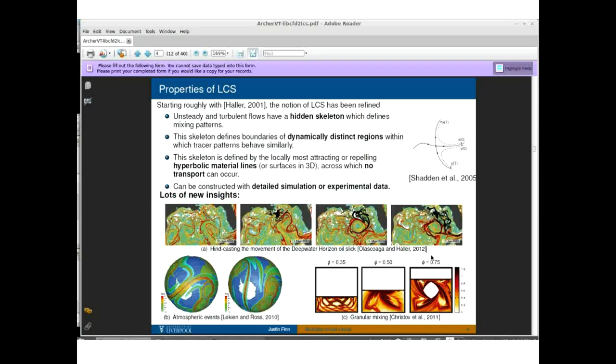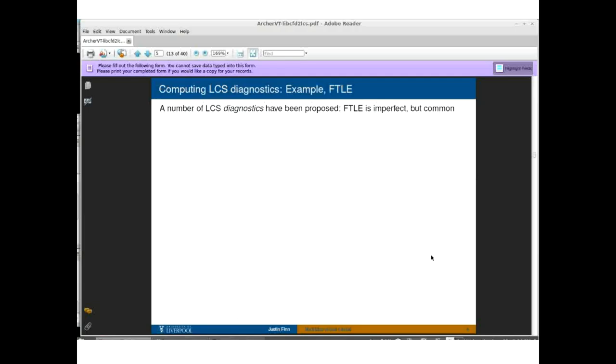There's been a lot of different ideas that have developed over the years about how we identify and actually compute the Lagrangian coherent structures. What I'm going to propose is that we think about Lagrangian coherent structured diagnostics. There's different ways to diagnose what the LCS are and how they evolve in the flow. I'm going to go through the example of the finite time Lyapunov exponent, which is a somewhat imperfect but common way to diagnose these. As we'll see, this is a good starting point for the more advanced and recently proposed diagnostics.